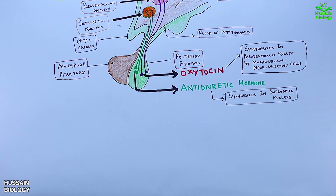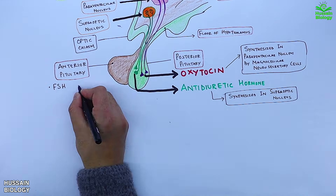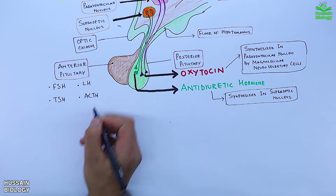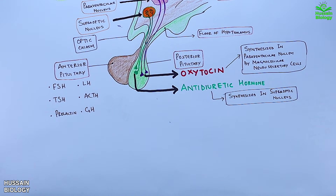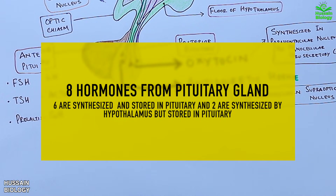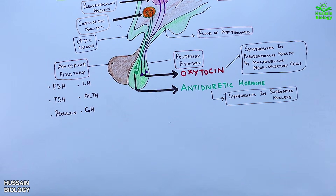The anterior pituitary synthesizes and releases six hormones: follicle stimulating hormone, luteinizing hormone, thyroid stimulating hormone, adrenocorticotropic hormone, prolactin, and growth hormone. The first four — FSH, LH, TSH, and ACTH — are termed tropic hormones as they target other endocrine glands. In total, eight hormones come from the pituitary gland: six synthesized in the pituitary and two synthesized in the hypothalamus and stored in the posterior pituitary.